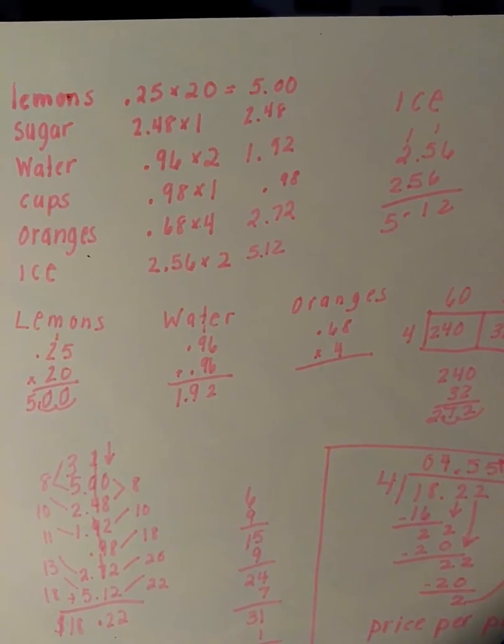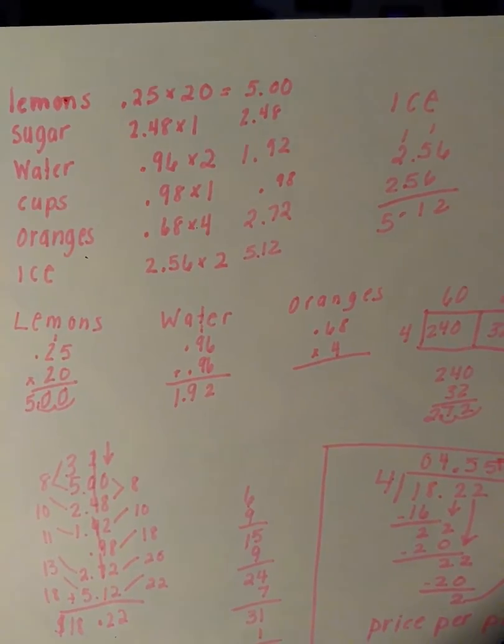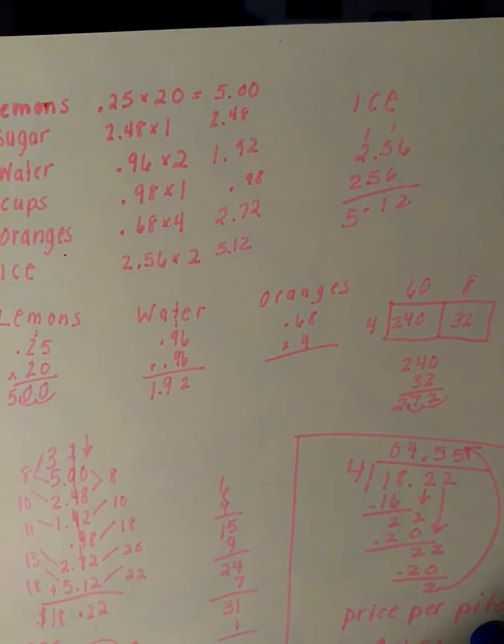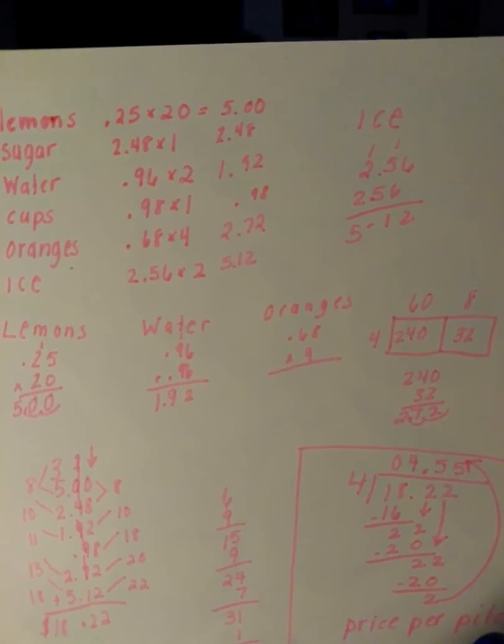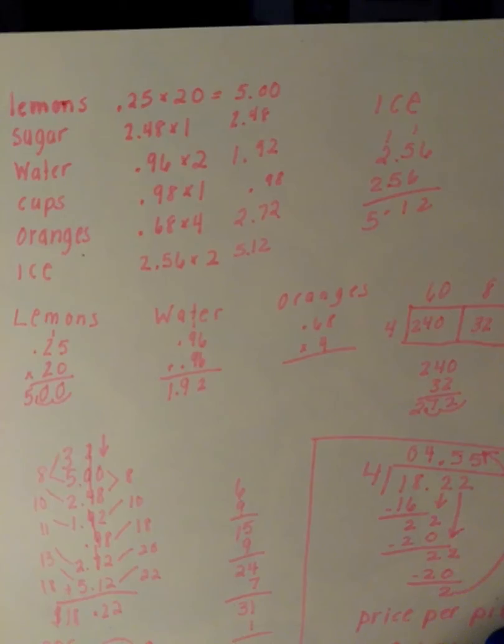Water I added $0.96 twice. Oranges I did partial products where I multiplied 4 times 60 and 4 times 8, added them together and then got my price.